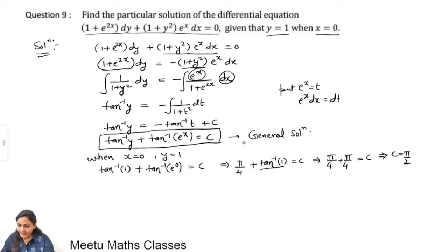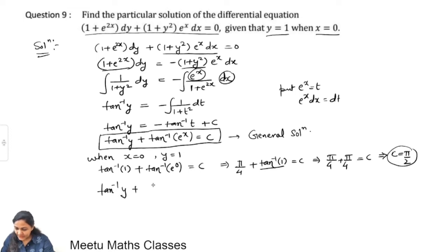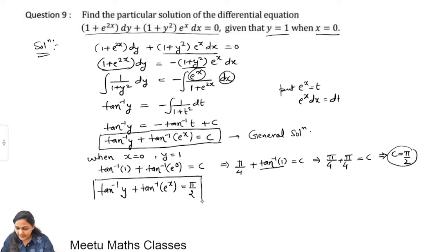Substituting the value of c in the general solution, we get: tan⁻¹ y + tan⁻¹(e^x) = π/2. This is the particular solution of the given differential equation.